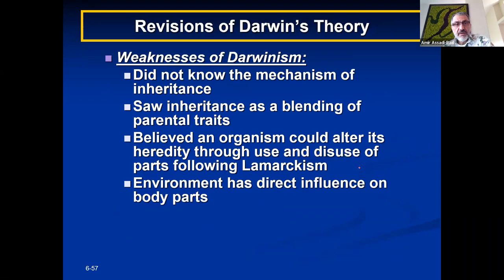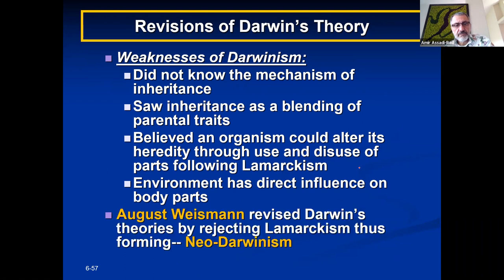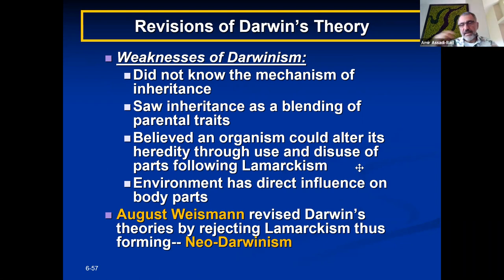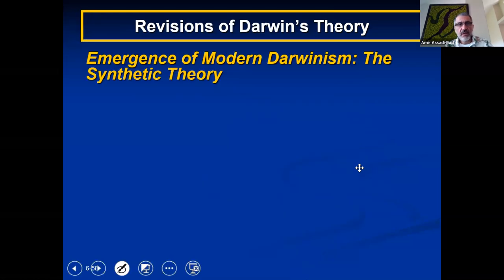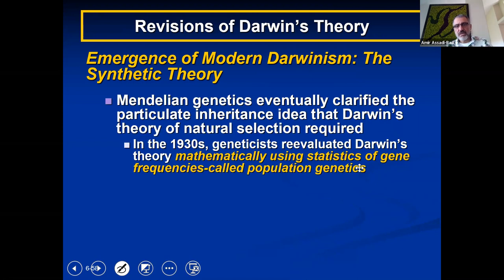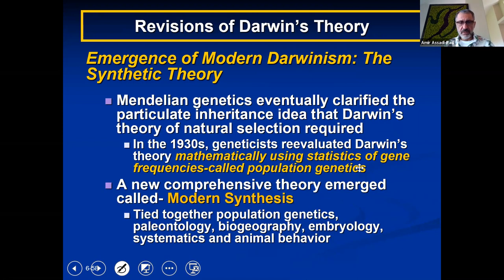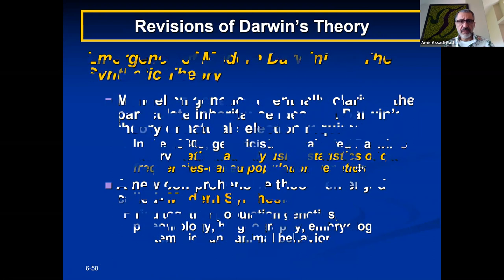Weaknesses of Darwin's theory — please read those and know what they are. August Weismann put together Mendel's laws and Darwin's findings and called it Neo-Darwinism, or the synthetic theory of evolution. That is the emergence of modern Darwinism — the modern synthesis.